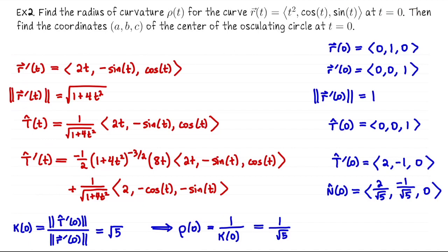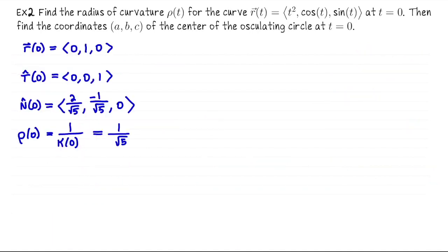We've answered the first part. Now we find the coordinates of the center of the osculating circle at t equals 0 — that's the circle that is the best fitting tangent circle to the curve at that point. To determine these coordinates, it's really important to sketch a picture and understand the vector arithmetic involved.